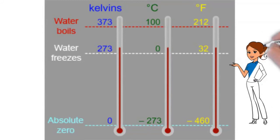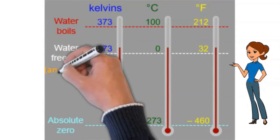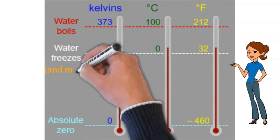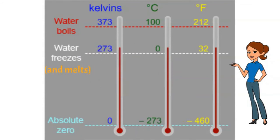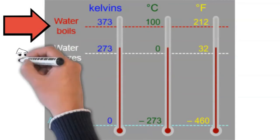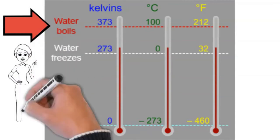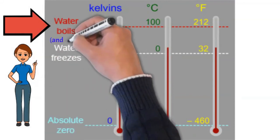Freezing and melting occur at the same temperature. Put another way, cooling liquid water will cause it to freeze at this temperature; heating ice will cause it to melt at this temperature. Heating liquid water will cause it to boil or enter the gas phase at 373 Kelvins, 100 degrees Celsius, and 212 degrees Fahrenheit.